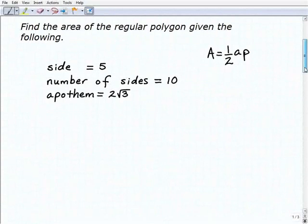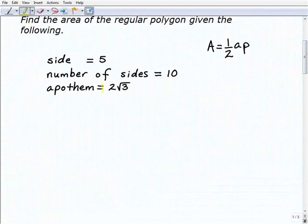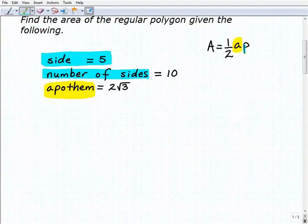You can see here that we have enough information to find the apothem and the perimeter. Obviously the apothem is given to us, but there's other pieces of information - the length of the sides and the number of sides - that's enough information for us to find the perimeter.